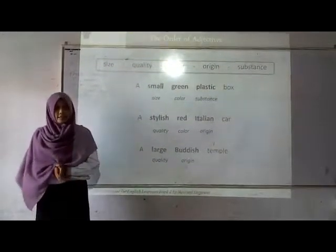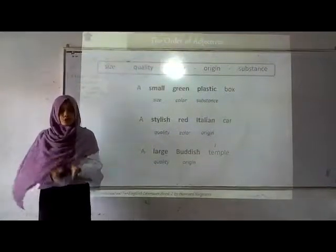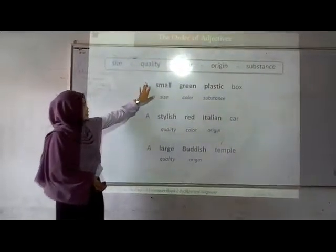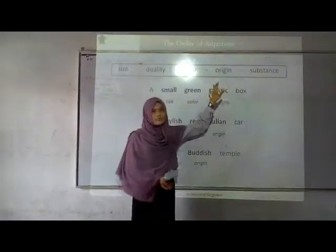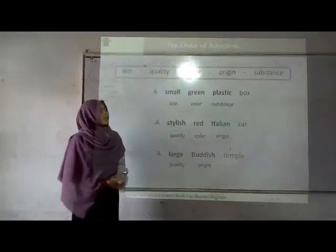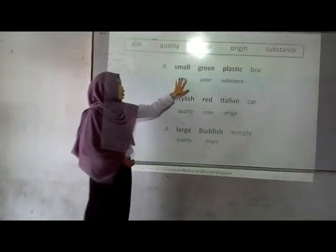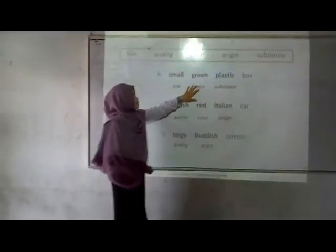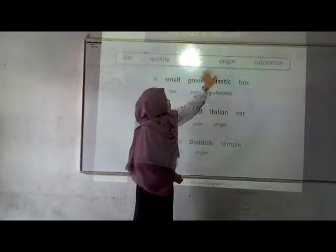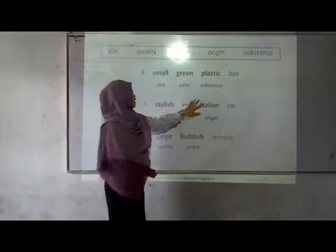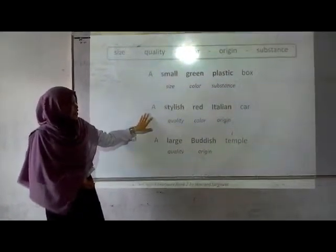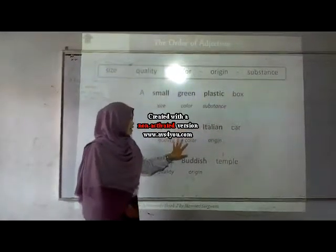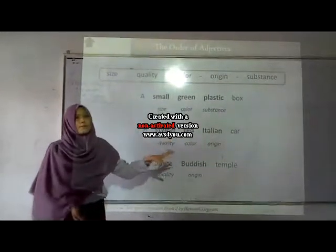Now I will tell you about the order of adjectives. To use adjectives, we need the right order. The right order is: size, quality, color, origin, and material. For example, a small green plastic box — small is the size, green is the color, and plastic is what the box is made of. A second example: a stylish red Italian car — stylish is the quality of the car, red is the color, and Italian is where the car is made.